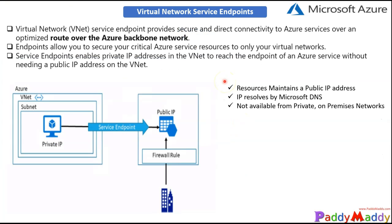Let's cover the key points for service endpoints. First, the service maintains a public address — it does not get a private IP address. The service endpoint is accessible by Microsoft DNS because the IP address hasn't changed. It is not available from private on-premises networks, which is a drawback. For example, accessing a service endpoint over a site-to-site VPN with private IPs won't work because there's no private IP assigned to the service endpoint.